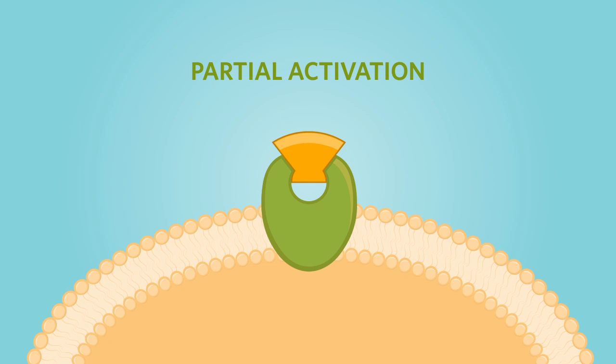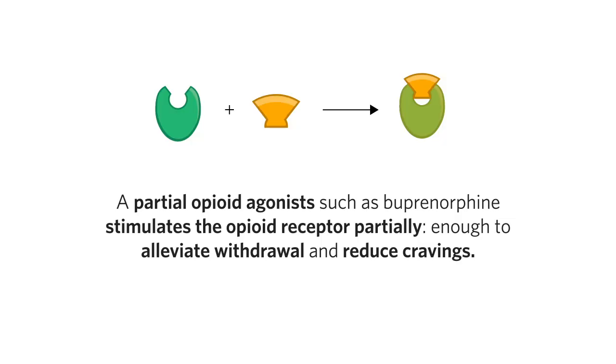When starting an individual on buprenorphine, it is given while a person is in opiate withdrawal. You can visualize this as the opiate receptors in the brain as being empty or open in a withdrawal state. And when buprenorphine is given, it alleviates withdrawal symptoms and helps with cravings for opiates.